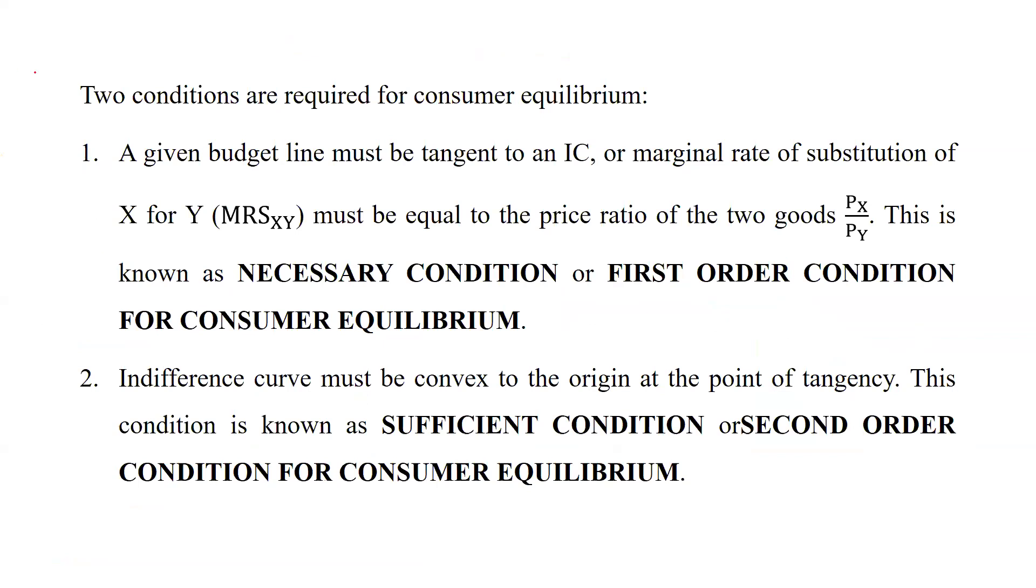Two conditions are required for consumer equilibrium. Number one: budget line must be tangent to an IC, or marginal rate of substitution of X for Y, MRS XY, must be equal to the price ratio of these two goods Px/Py. This is known as necessary condition or first order condition for consumer equilibrium.